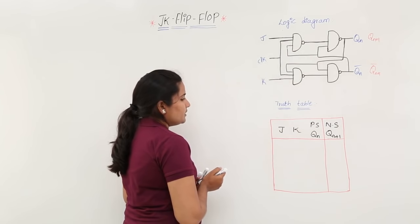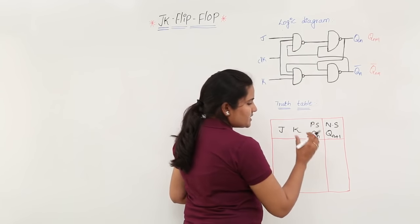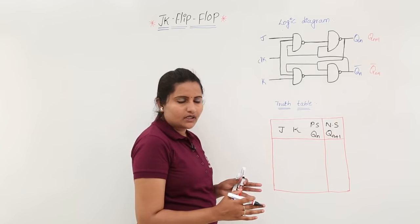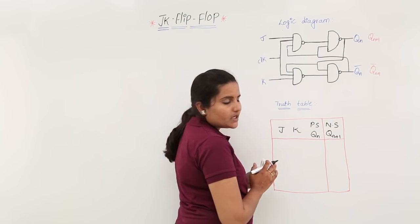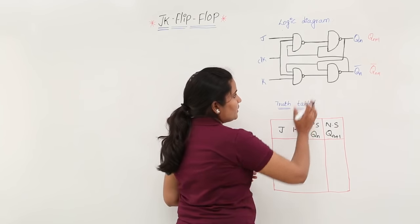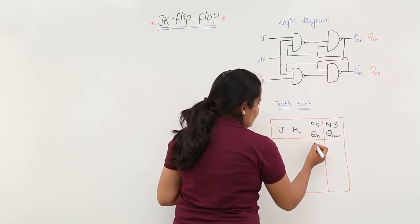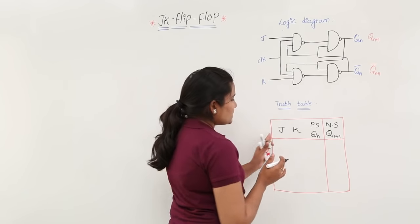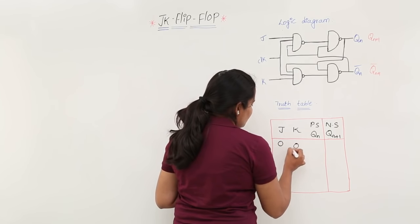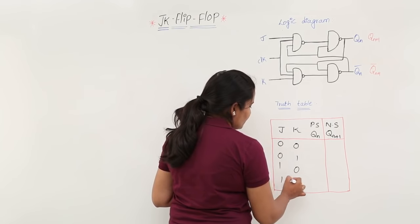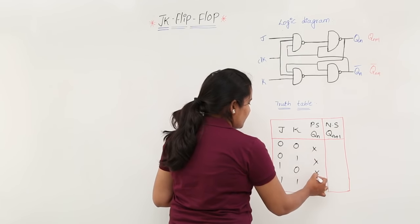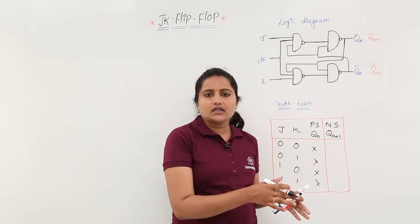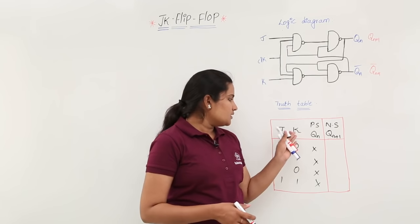Now I am propagating the inputs. As usual, your present state you do not know. The required output for any sequential circuit is your next state only, so next state means Qn+1, and this you need to determine. You do not know your present state, so you can take don't care at the present state value. Your JK inputs may be anything like 00, 01, 10, and 11. You do not know your present state at any value, so I am taking don't care — the present state may be either 0 or 1.